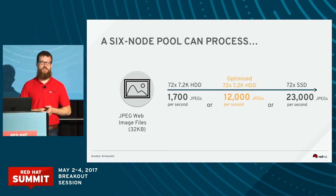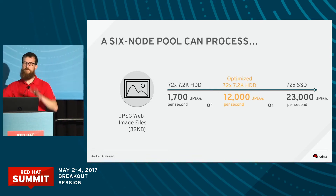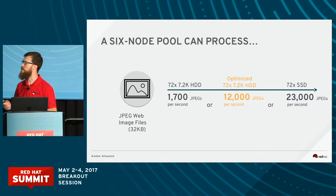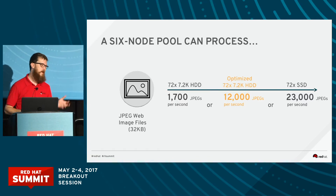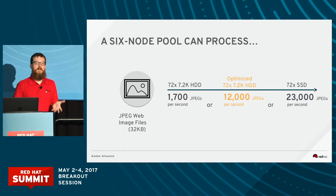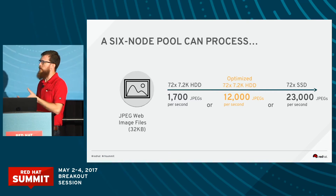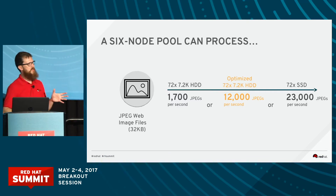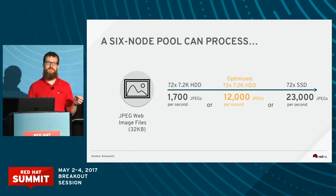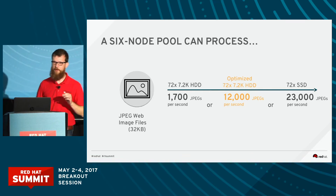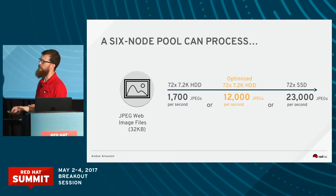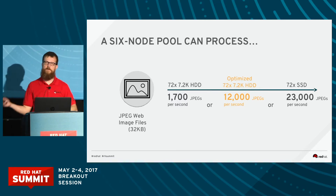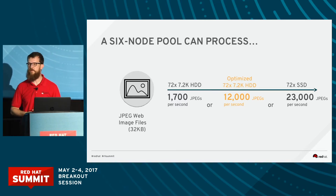Let's say you just kind of throw it out there and do a default configuration without thinking much about it — maybe you can get 1,700 JPEGs processed per second. Not bad. But let's say you spend a little time and actually architect to that workload up front, make the right decisions, and you suddenly go from 1,700 JPEGs to almost a tenfold increase — 12,000 JPEGs per second.